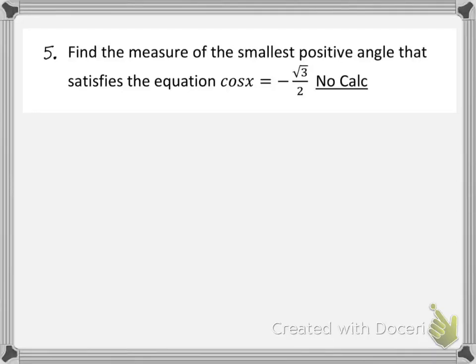In this case, we've got an equation, and we're looking for the smallest positive angle that satisfies the equation. So that means we're looking for some angle that has an x-coordinate of negative square root of 3 over 2.